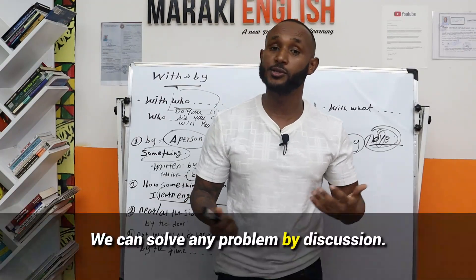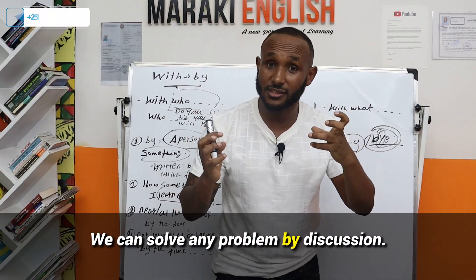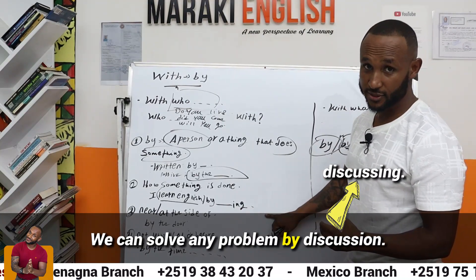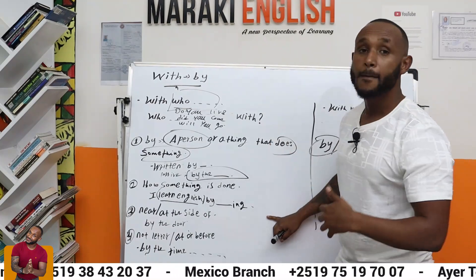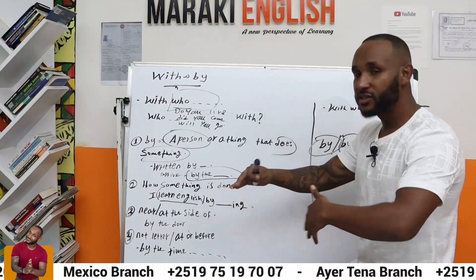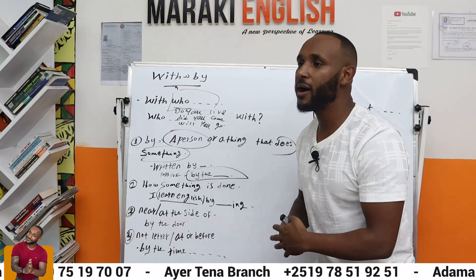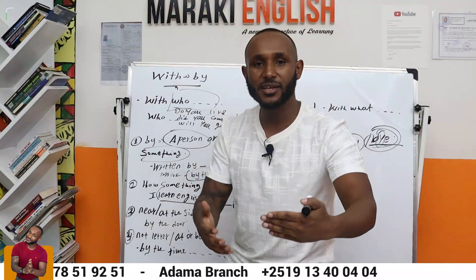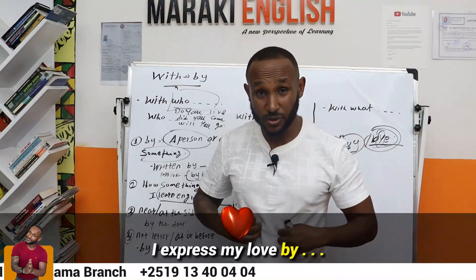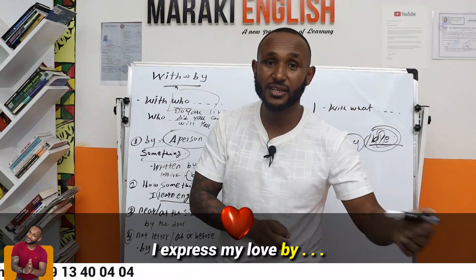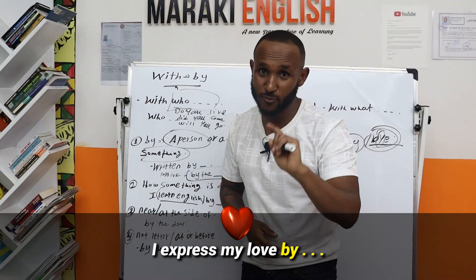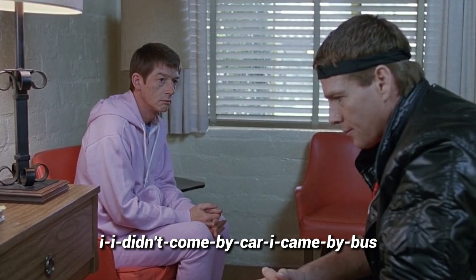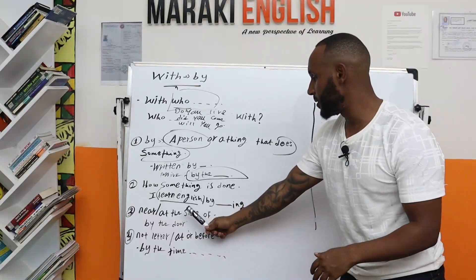We can solve any problem by discussion — or by discussing. You have both: you can put a noun or a verb. If you have a verb, don't forget to add -ing. I try to make you understand this lesson by giving you too many examples. So 'by' is used to show you how something is done. I show my wife the love I have for her by buying her gifts, by telling her what she means to me, by doing something. I didn't come by car — I came by bus.